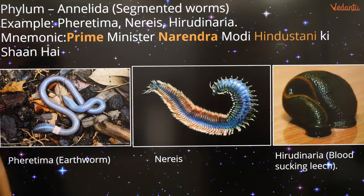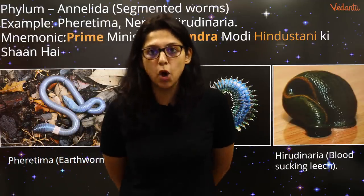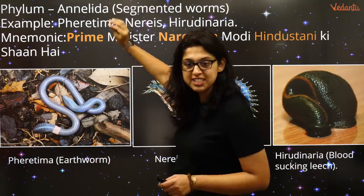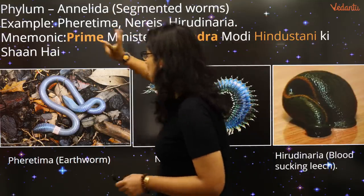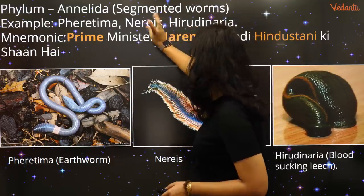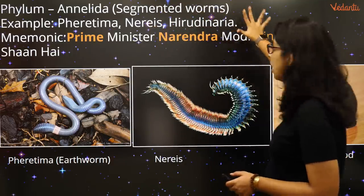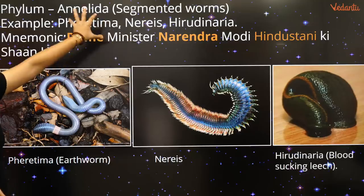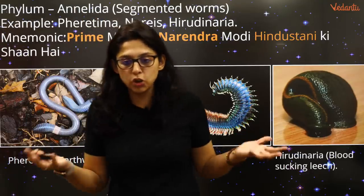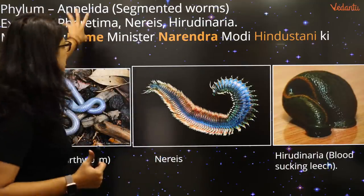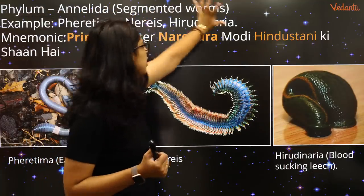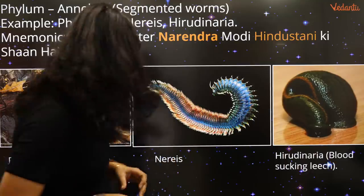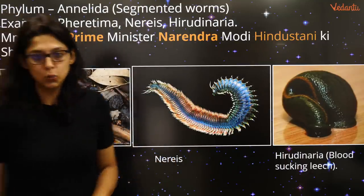Phylum Annelida: 'Prime Minister Narendra Modi Hindustan' — remember Howdy Modi, Modi went to Houston! P = Pheretima (earthworm), N = Nereis, H = Hirudinaria. Hirudinaria produces hirudin — an anticoagulant that does not allow blood to clot. Nereis and Pheretima = earthworm. P-N-H: Prime Minister Narendra Modi Hindustan = Annelida.